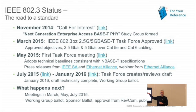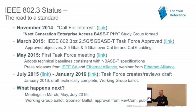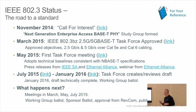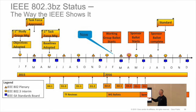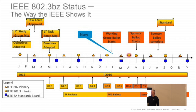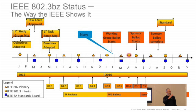On the standards timeline: we started in November 2014 with a call for interest that I led. In March we agreed to form a task force. In May we adopted our technical baselines — meaning we solved the arguments. Between then and January we reviewed it, and we started working group ballots. We think we're technically complete. We believe our standard will be done in September. If this goes as planned, that's less than two years from start to finish — we're going pretty fast.